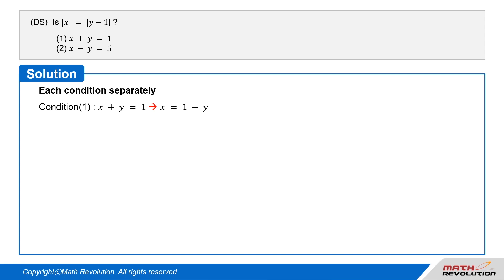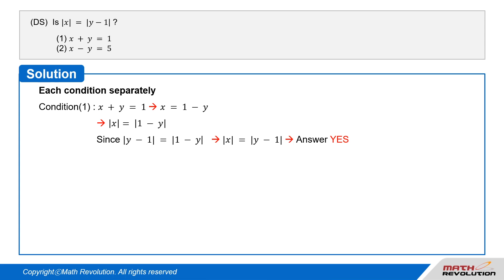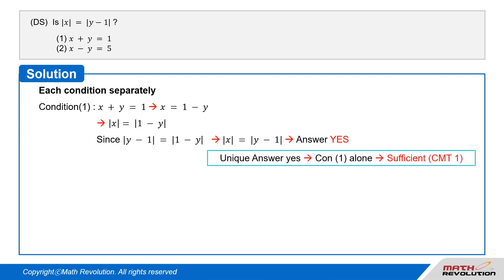Condition 1 tells us that x plus y equals 1, that is, x equals 1 minus y. This further tells us that the absolute value of x equals the absolute value of 1 minus y. And we know that the absolute value of y minus 1 equals the absolute value of 1 minus y. So we can say that the absolute value of x is equal to the absolute value of y minus 1. We get yes as a unique answer, so this condition is sufficient by CMT1.